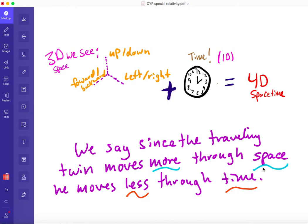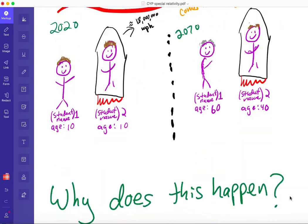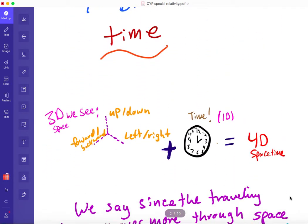Like I said, the traveling twin moves more through space, or the faster he moves through space, the less he moves through time. So if my twin was going faster, the clock might have ticked so that only 20 years has passed instead of 30. If he moves slower, maybe 40 years has passed, and so on. So this is very weird.